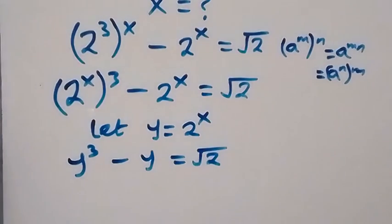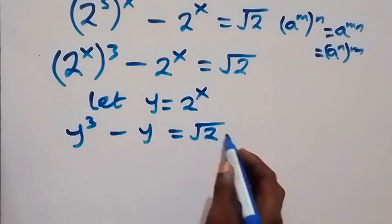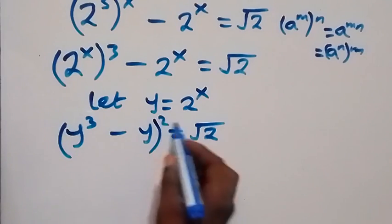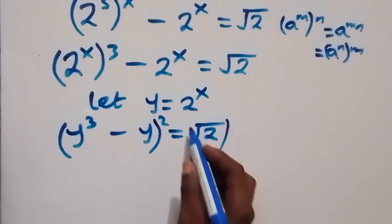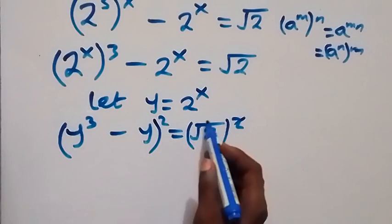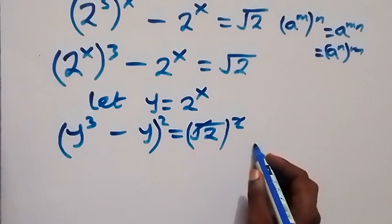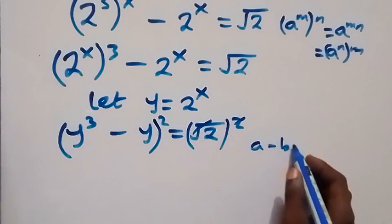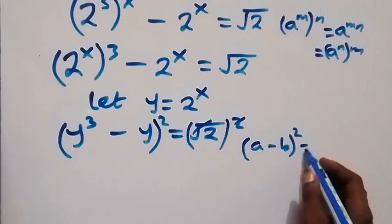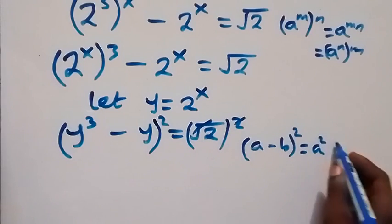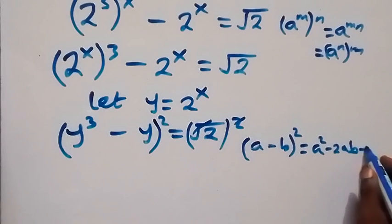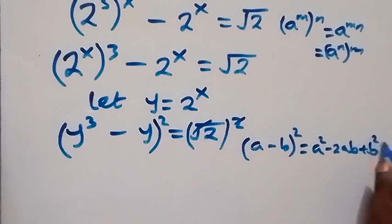Let's square both sides of this equation to remove this square root. The square on the right side cancels the square root, leaving 2. On the left side, when we have (a minus b) squared and we expand, this gives us a squared minus 2ab, then plus b squared.